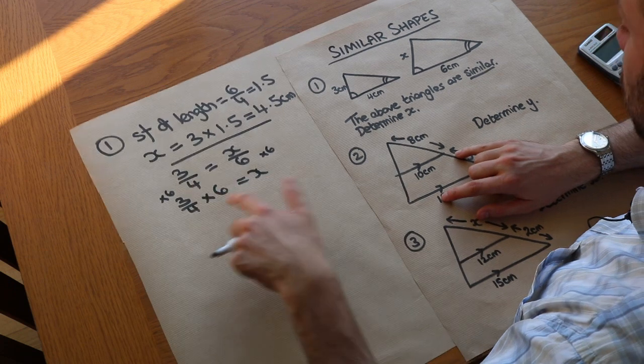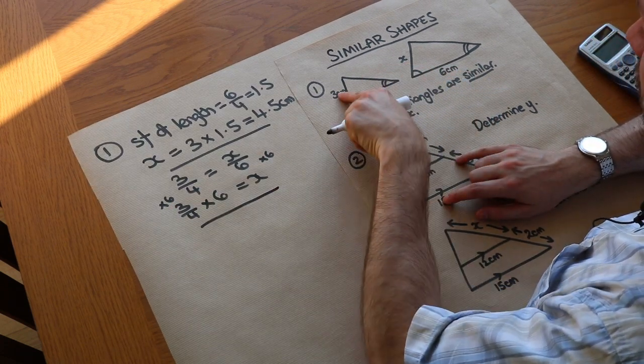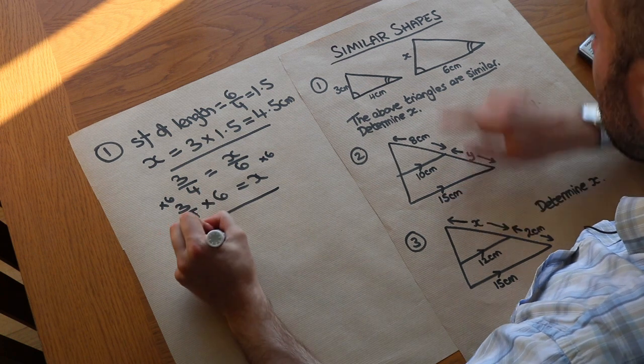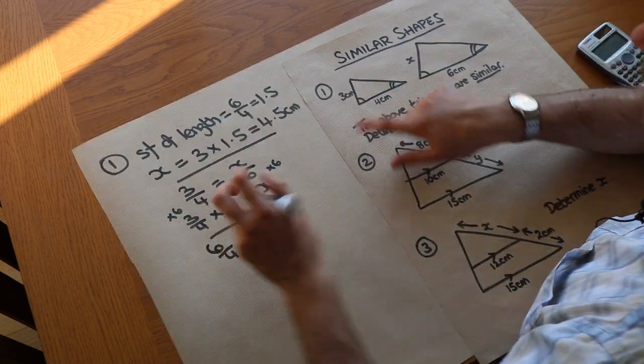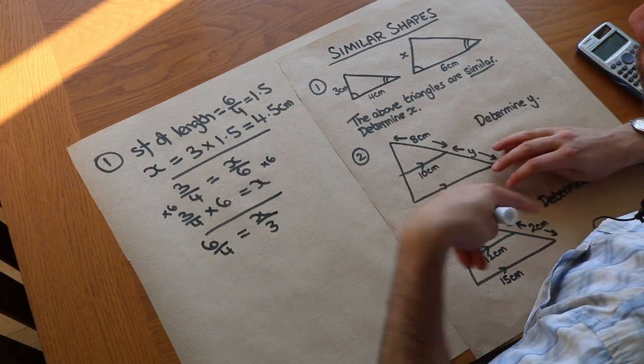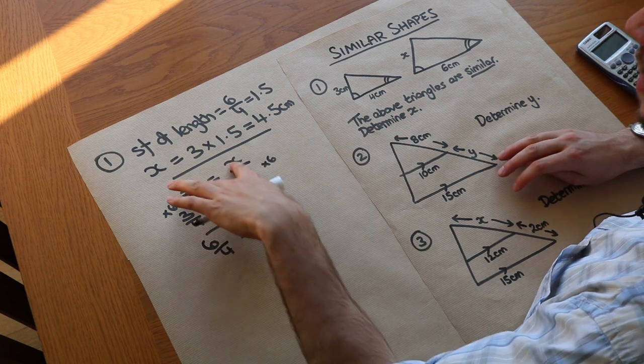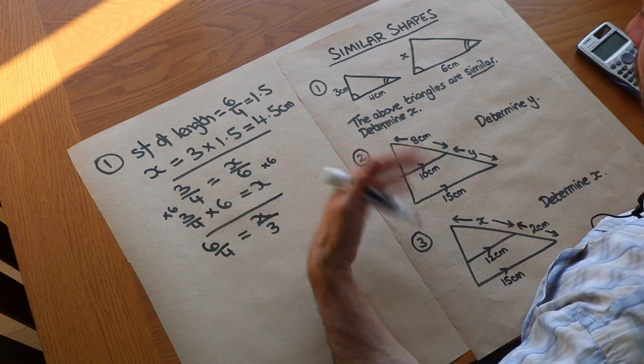You could have also generated another equation by doing that divided by that equals that divided by that. So you could do 6 over 4 equals x divided by 3, which is effectively the same as what we did here. The advantage of this is that if you have algebraic sides, this method of forming fractions in an equation can be easier.